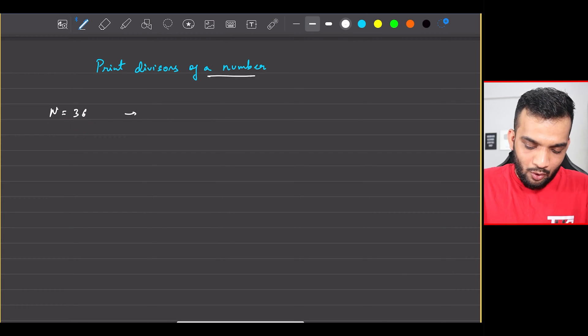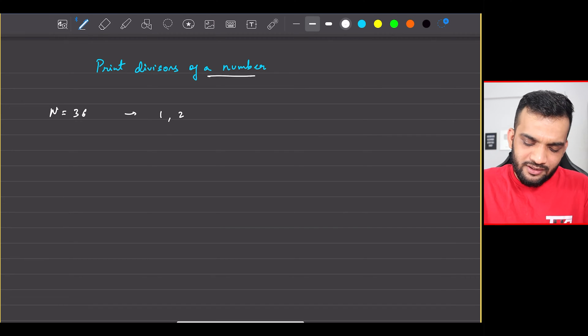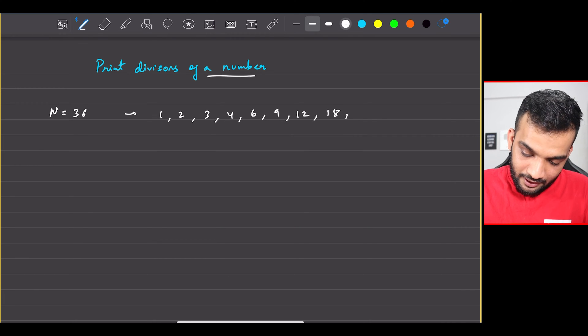So we have to write down all the divisors. One is definitely a divisor. Two is yes, two is a divisor. Three is a divisor. Is four a divisor? Yes. Is five a divisor? No. Is six one? Yes. Is seven? Eight, nine? Yes, nine is one.